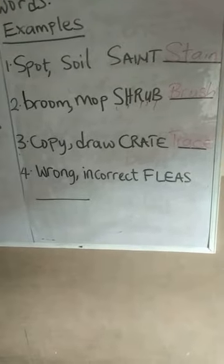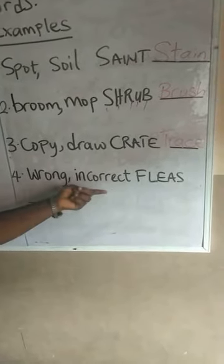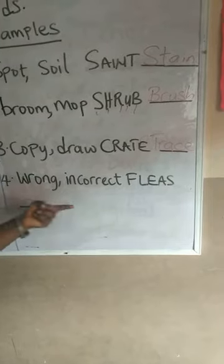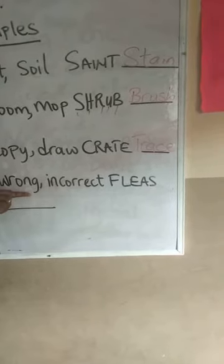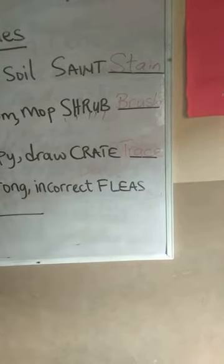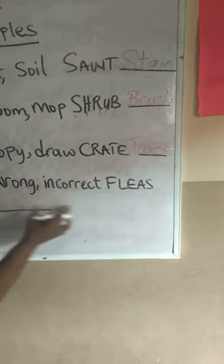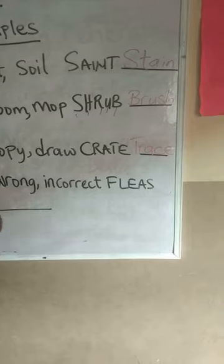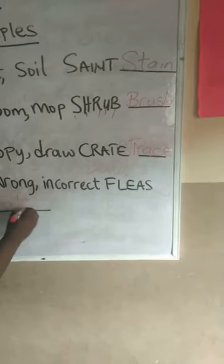Let's look at the fourth example. We have wrong and incorrect. When something is wrong, it's not correct. What can we get from FLEAS that gives us the same meaning as these two words? The answer is false: F-A-L-S-E.